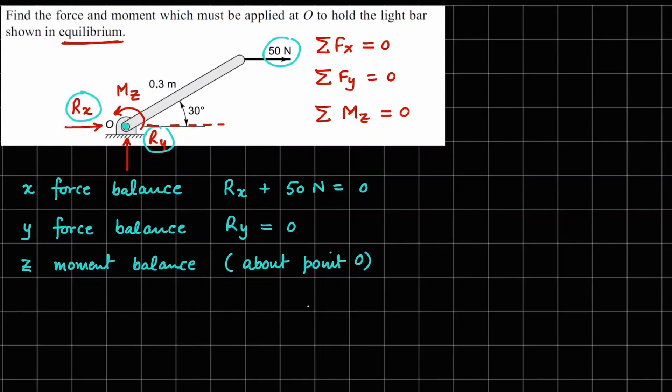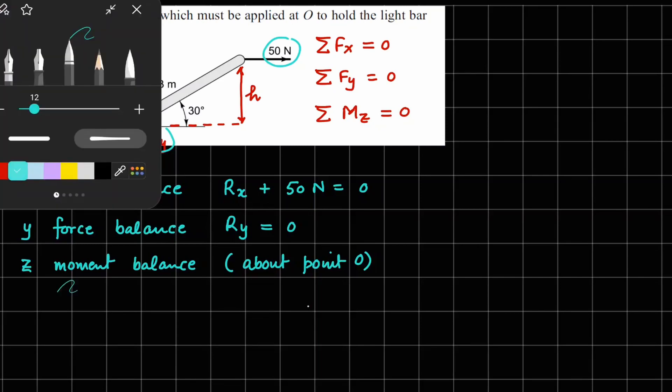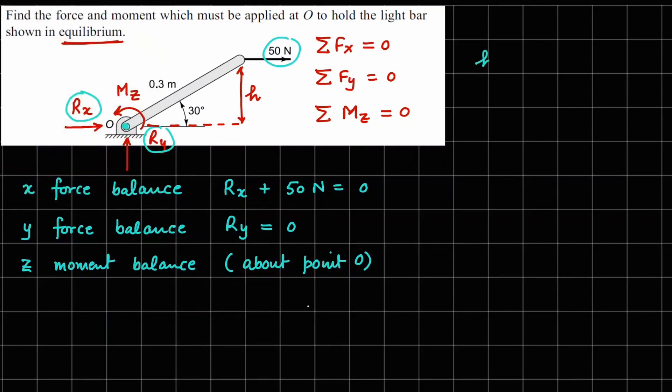So about point O, this 50 newton force is going to have this momentum, let's call this H. And the value of H can be written as 0.3 meters times, if this angle is 30 degrees right here, it's going to be the sine component.